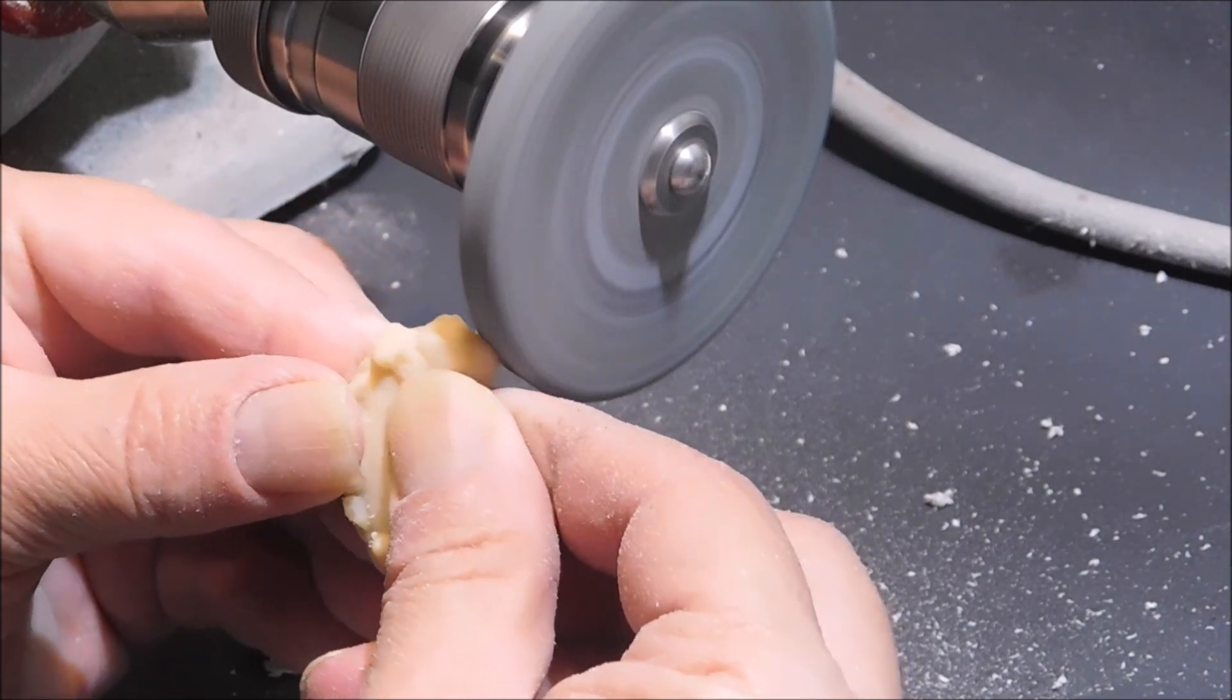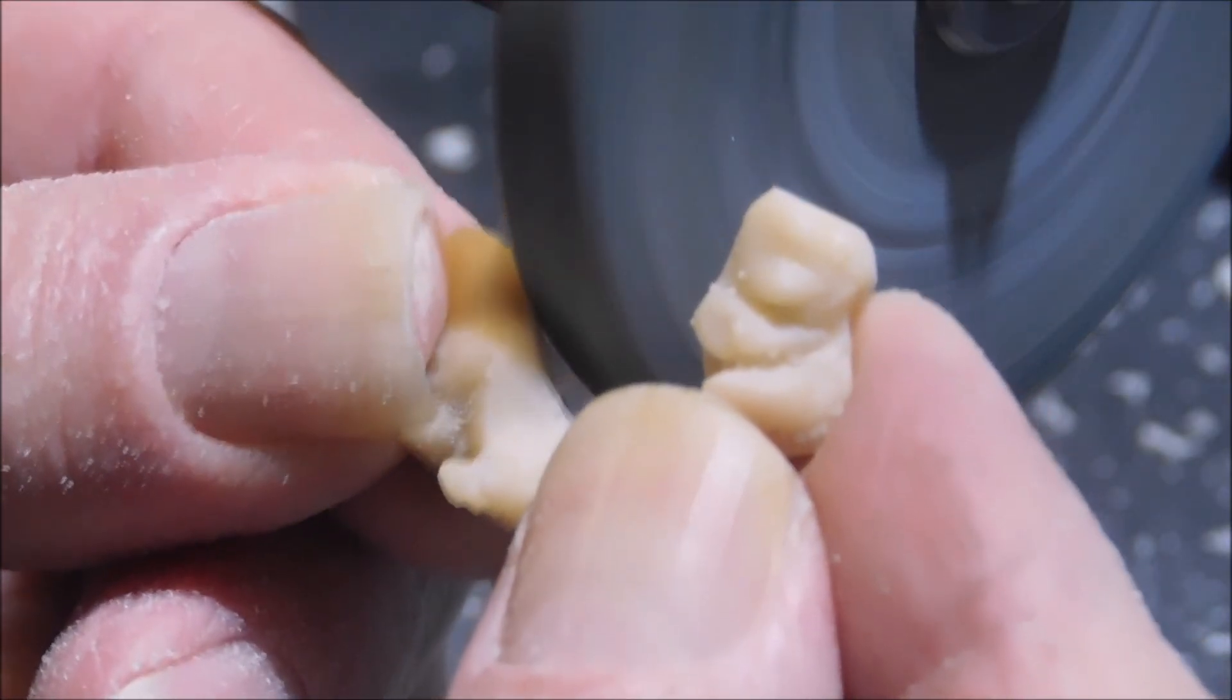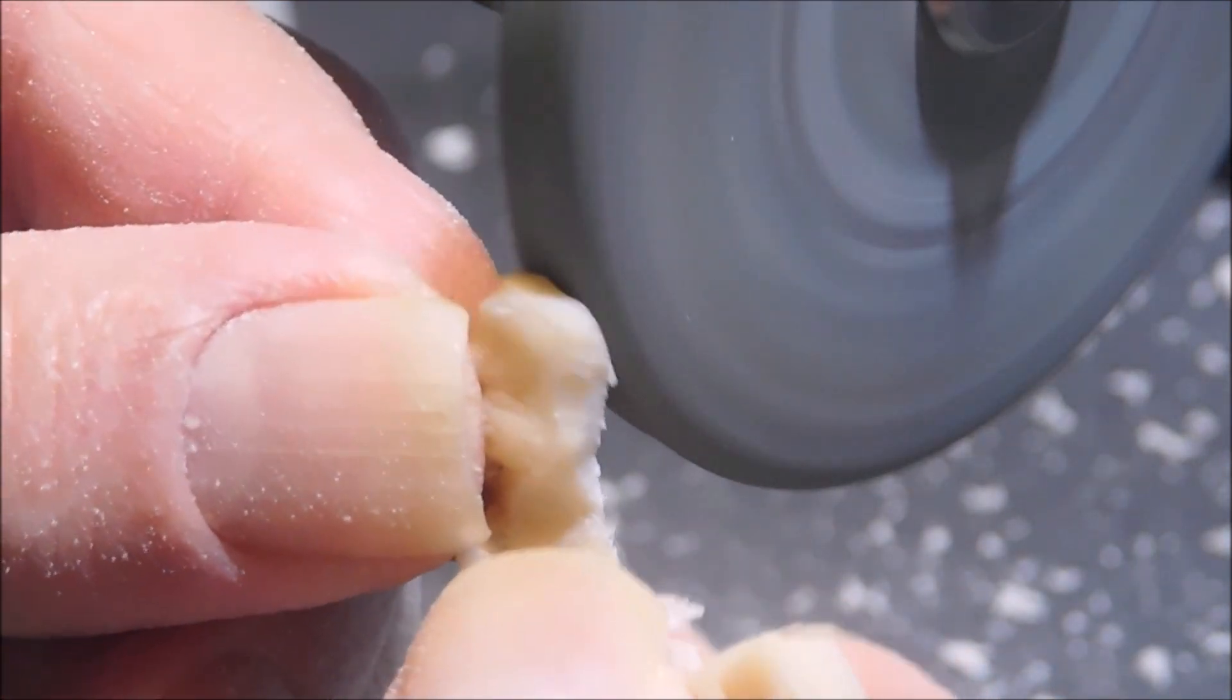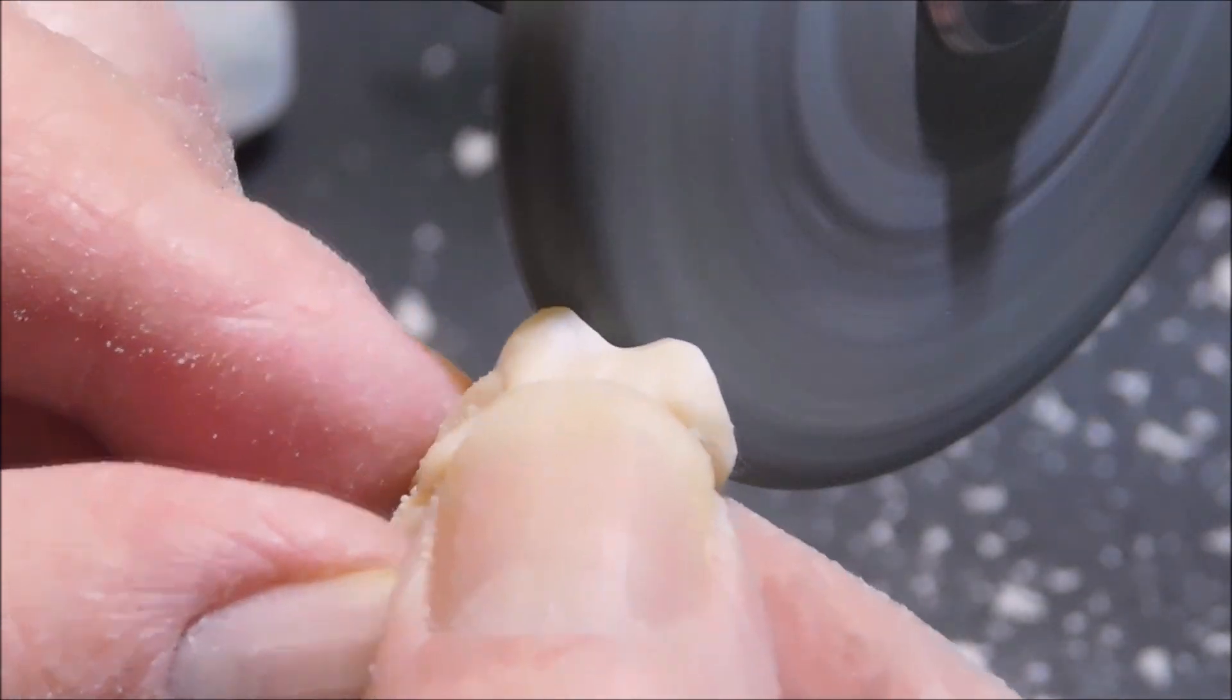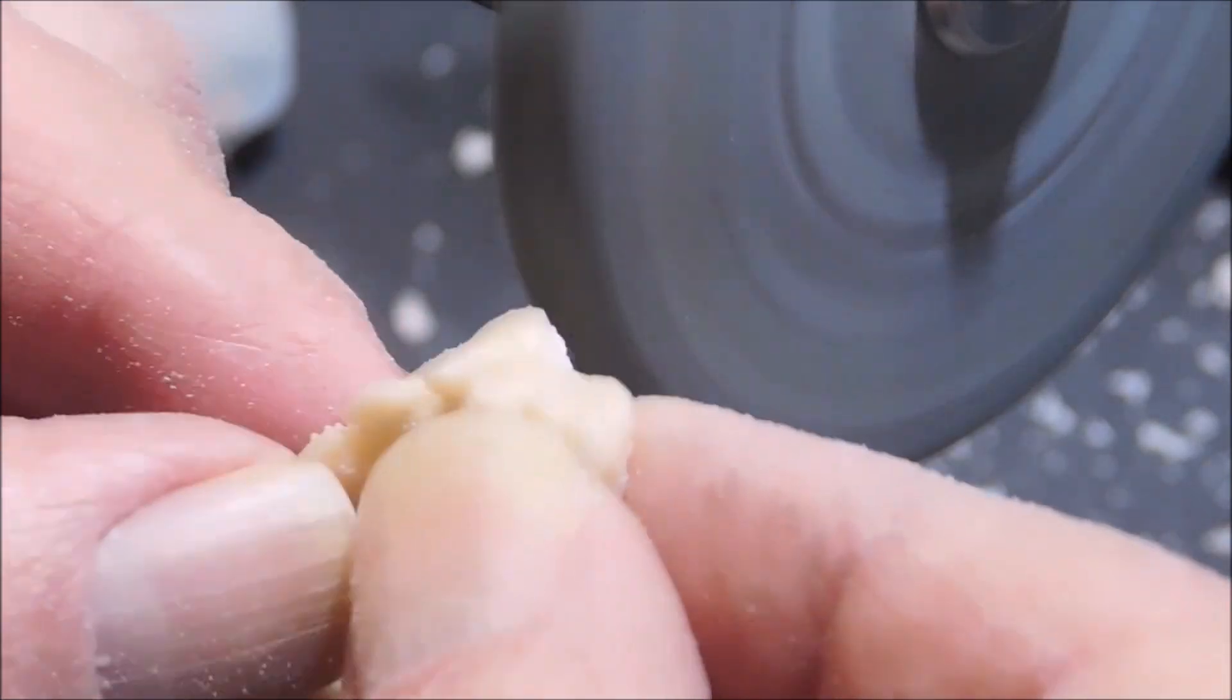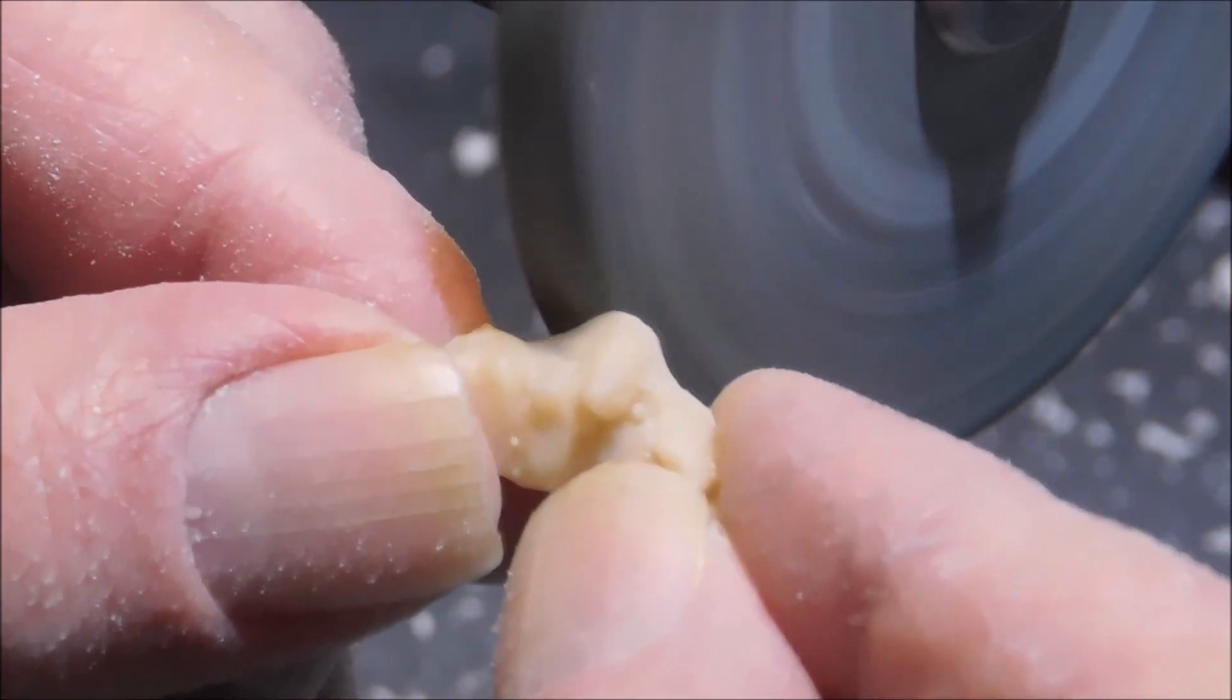I simply grind it using certain rocks, discs, and burrs, and I get it really close to just having the teeth without any extra material. I'm going to be replacing what I'm cutting away with pink acrylic instead of the tooth acrylic.